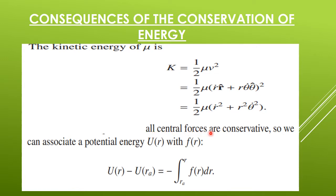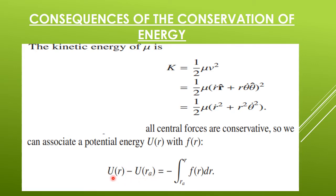We know that all central forces are conservative, so we can associate a potential energy u(r) with f(r). The work done in bringing a particle from position r_a to r is defined as: u(r) minus u(r_a) equals minus the integral from r_a to r of f(r) dr. The amount of work done is transformed into potential energy of the particle at position r.